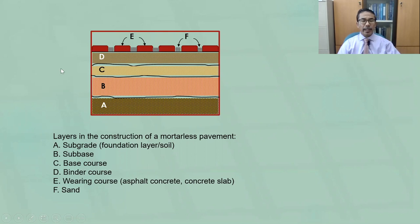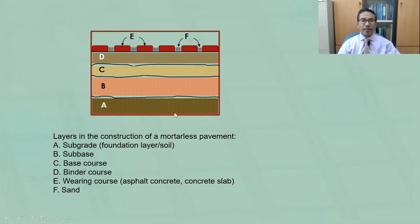This diagram shows a typical cross section of layers in the construction of a normal road or highway. Layer A represents the subgrade or foundation soil. Layer B represents the sub base. Layer C is the base course. Layer D is the binder course. Layer E is the wearing course, normally asphalt or concrete slab. Layer F is a filler, normally sand. In this video I will be talking about the application of geosynthetic material laid on top of the subgrade or foundation layer, with aggregates placed on top of this geosynthetic.